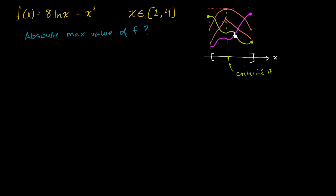You could have a critical number in between where the slope is zero, but it isn't the maximum or minimum. What we can do is find all the critical numbers, then test the function evaluated at the critical numbers and at the endpoints, and see which of those is the largest — those are the possible candidates for where f hits a maximum value. So let's find the critical numbers first.